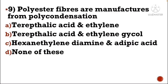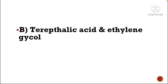Next question: Polyester fibers are manufactured from poly condensation of — Option A: terephthalic acid and ethylene, Option B: terephthalic acid and ethylene glycol, Option C: hexamethylene diamine and adipic acid, Option D: none of these. The correct answer is Option B, terephthalic acid and ethylene glycol.